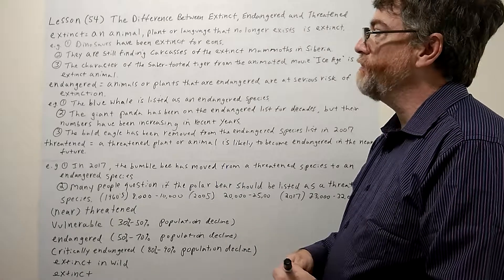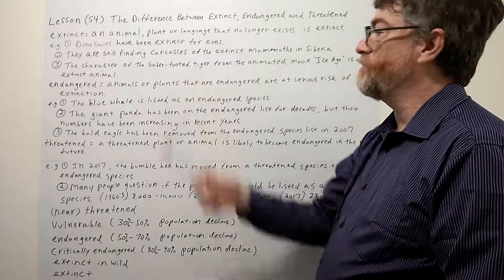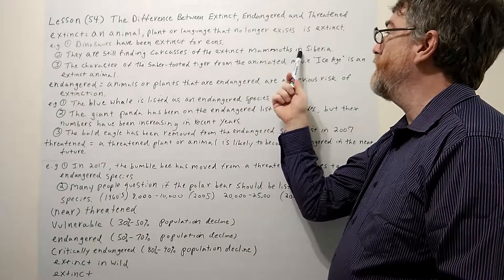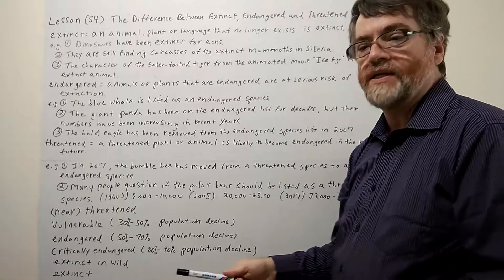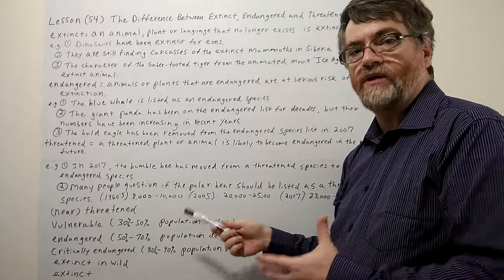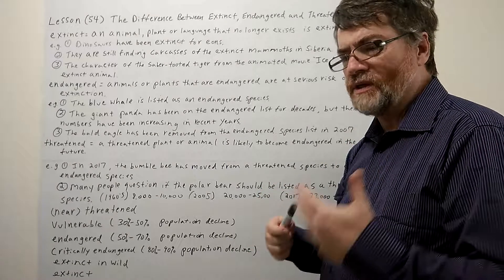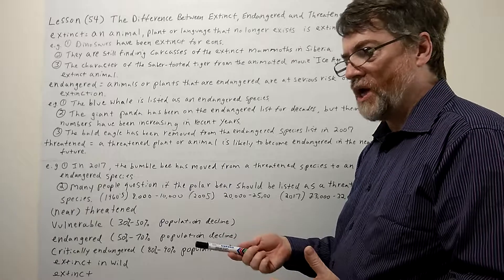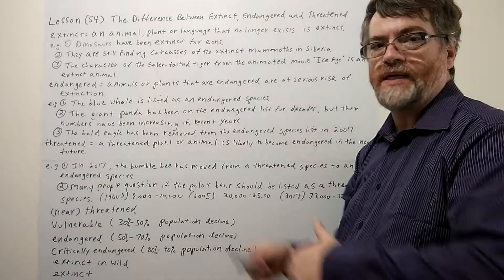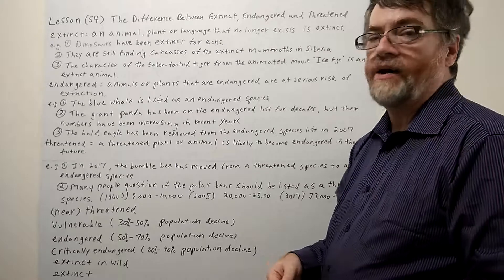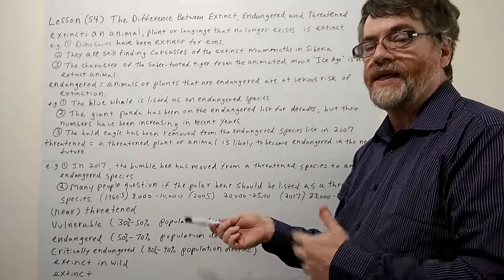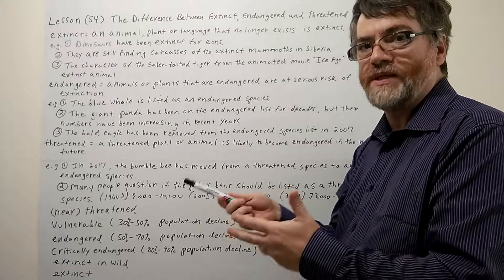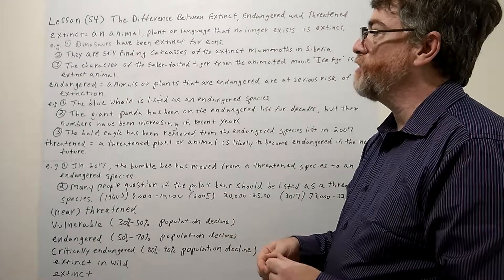Number two: they are still finding carcasses - the dead body of an animal - carcasses of extinct mammoths in Siberia. Remember, mammoth, that's that ancient sort of elephant-looking animal. Looks like our elephant today but a lot more hairy, kind of a reddish hair, and their tusks tend to be longer. Perfect mammoth.